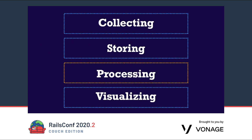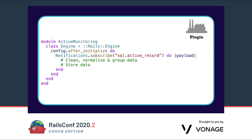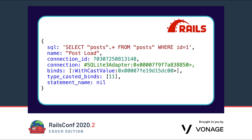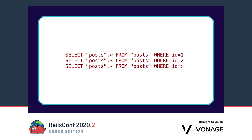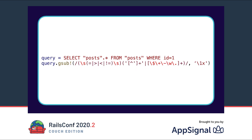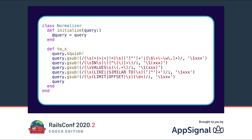In the third chapter we will process the data received in the SQL event. Before we can store the data in the database we will need to clean, normalize, and group it. We start with the normalization process. The payload we receive from Rails contains the SQL query and the name. If we look at the SQL query we notice that it contains values. For analyzing the data we need to remove these values and normalize the queries — this is necessary so we can group them together later.